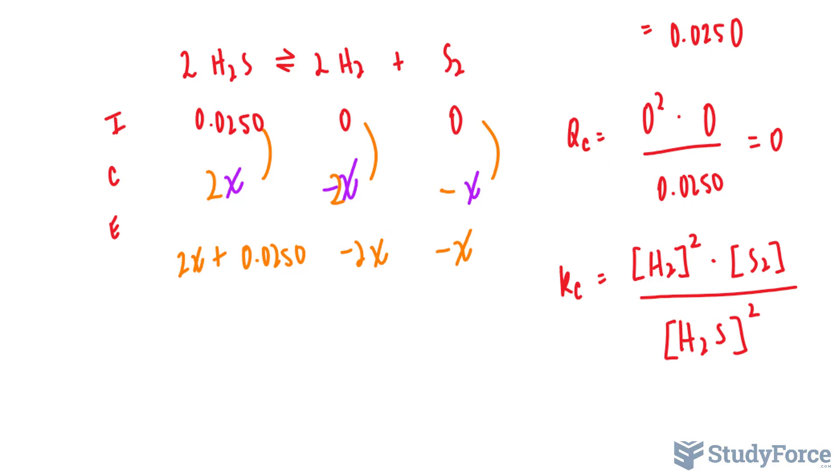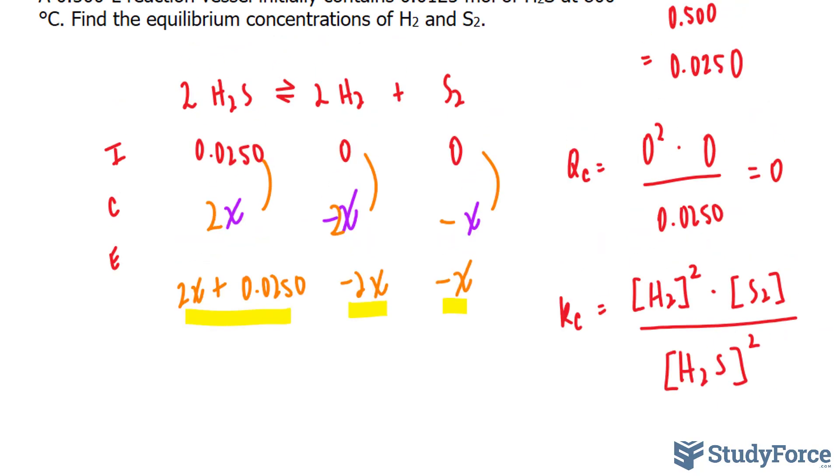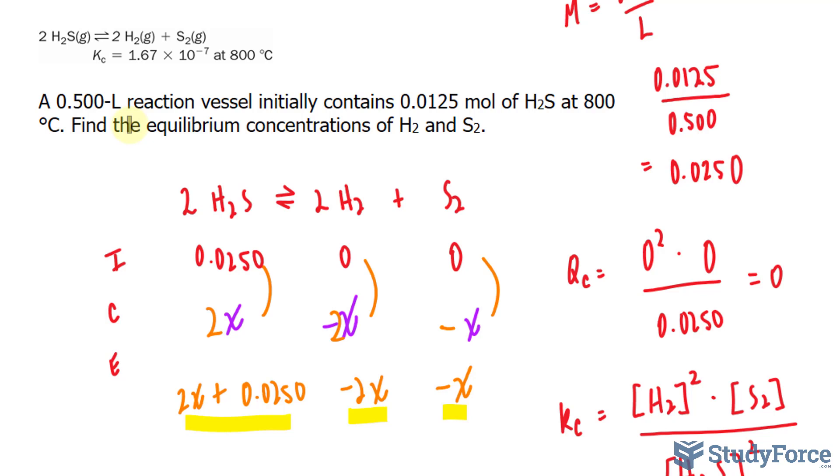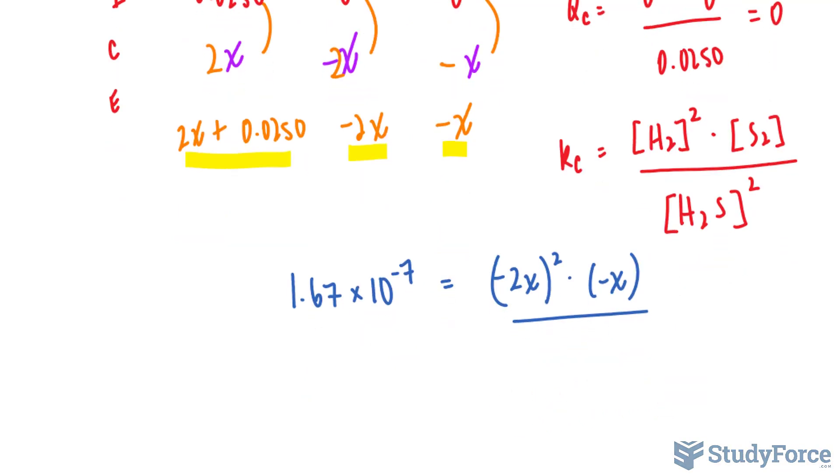I need to substitute these mathematical expressions right into my Kc equilibrium expression. And mind you, I can replace Kc with 1.67 times 10 to the power of negative 7. And that's equal to the expression for hydrogen gas, and we said that it was negative 2X raised to the power of 2, multiplied to the expression for sulfur gas, and it's negative X, all over the expression here, which is 2X plus 0.0250.